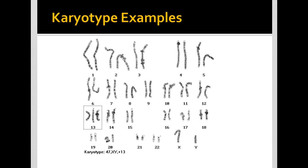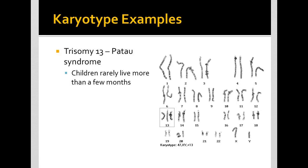Another example of this is the trisomy at 13. This is Patau syndrome, this trisomy at 13. Again, children rarely live to be more than a few months old.